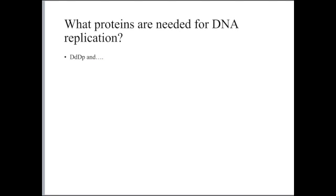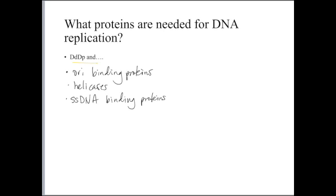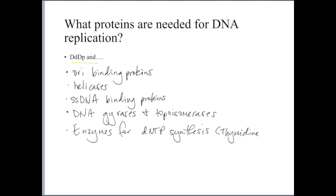Now as you are all aware, DNA replication requires a lot of different proteins working together to carry out this very complex process. So the proteins that are needed for DNA replication include the DNA-dependent DNA polymerase as well as many other cellular proteins, and this is true for cellular DNA replication and viral DNA replication. So in addition to the DNA-dependent DNA polymerase, genome replication also requires origin binding proteins, helicases to unwind DNA, single-stranded DNA binding proteins that keep the separated DNA from re-annealing, DNA gyrases and topoisomerases, and we've talked about what roles those play in cells before, and of course our cells need the enzymes to make DNTPs so that we can synthesize nucleic acid.